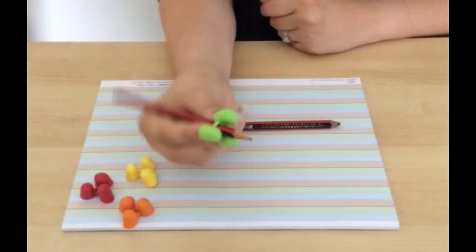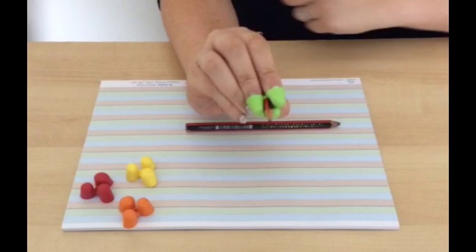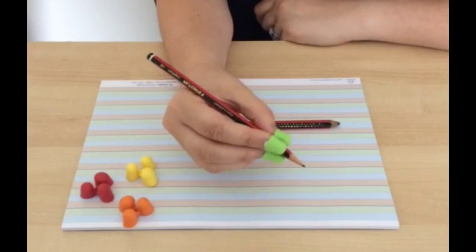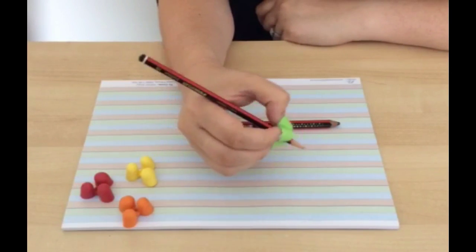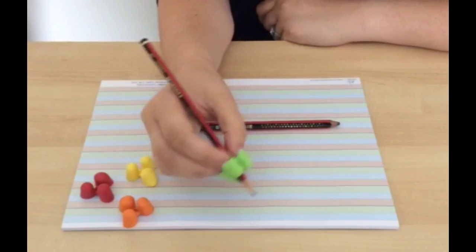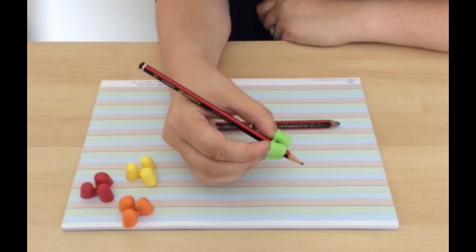Each finger goes into one of the claws and there you go, a dynamic tripod writing grasp in order to allow for the most movement through the finger muscles to help with smooth, coordinated writing.